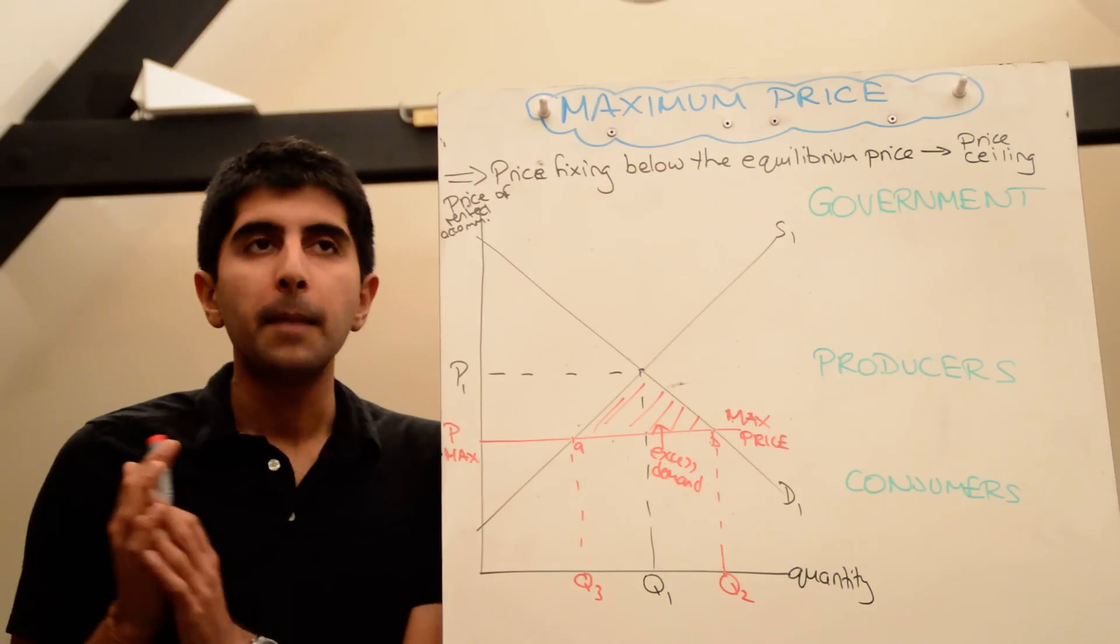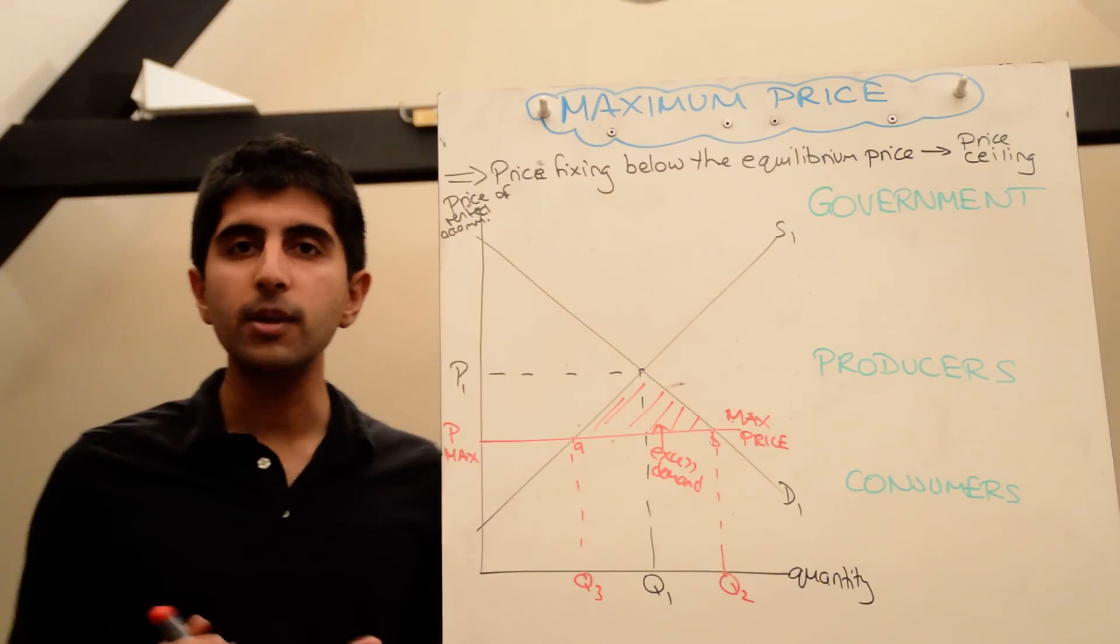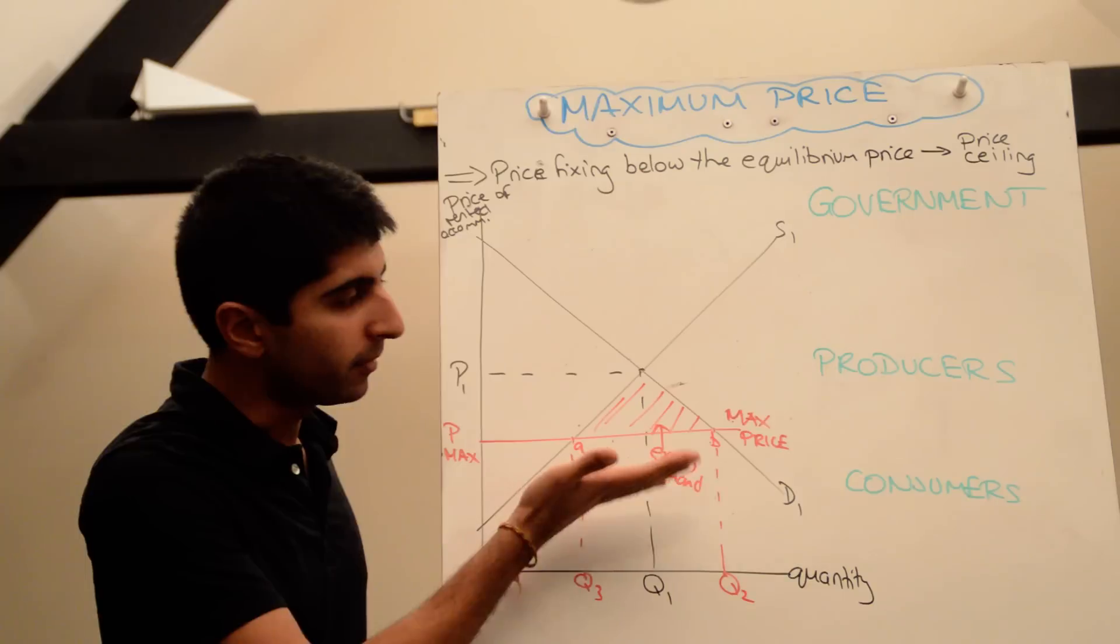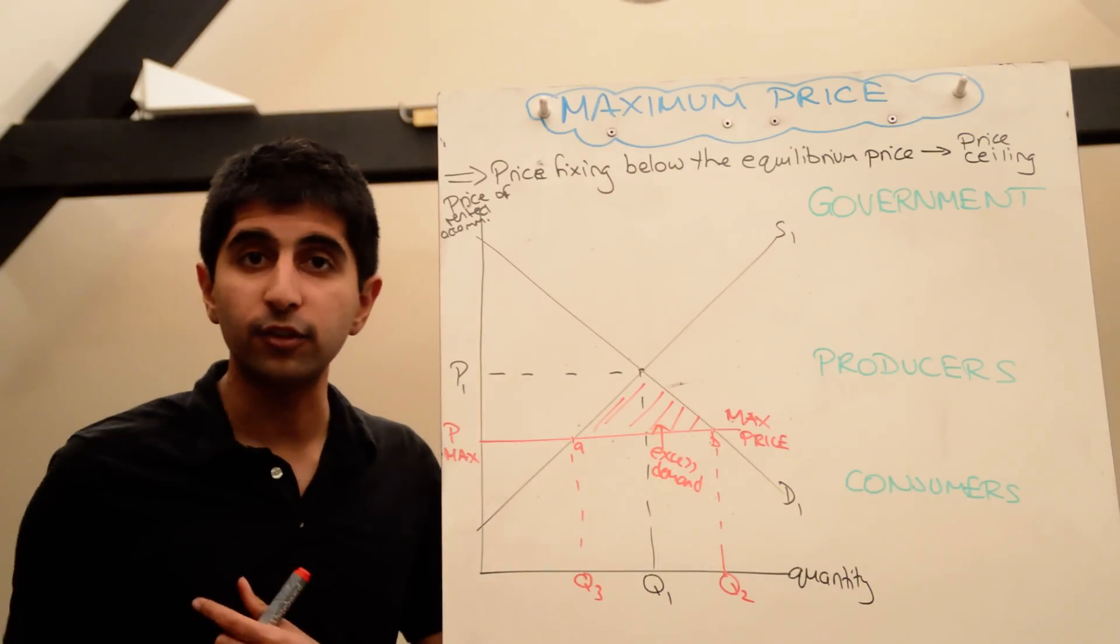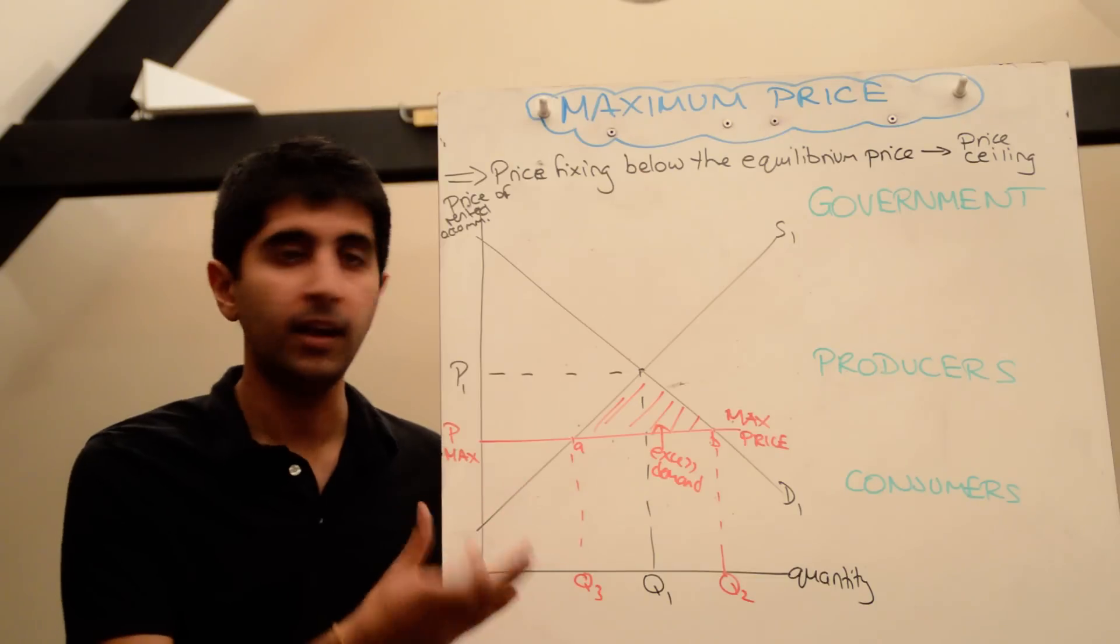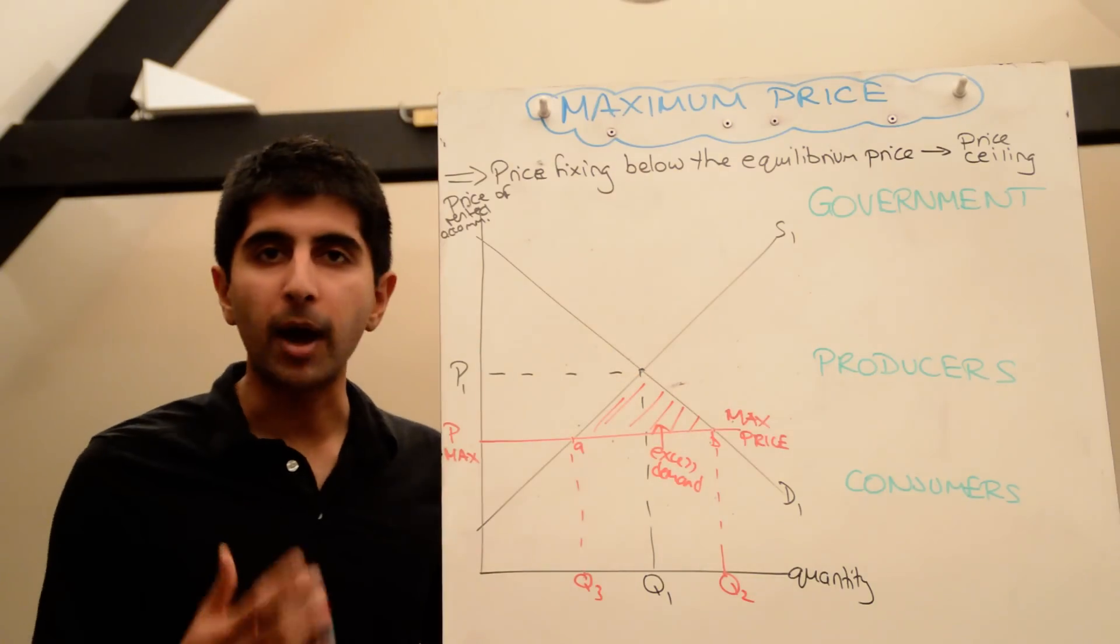And the problem is, because you've imposed a maximum price, there is no way for the free market to ration that excess demand. Usually in the free market, signals will be sent to producers that the price is too low. The incentive will then be to raise the price, contract your demand, ration the excess demand, and get to the market equilibrium, the market clearing price.